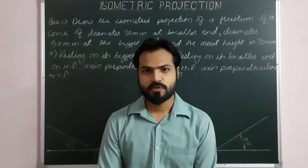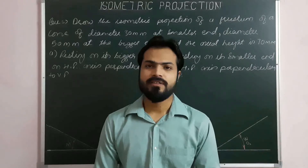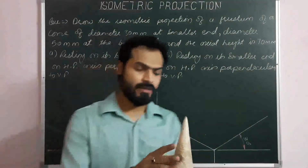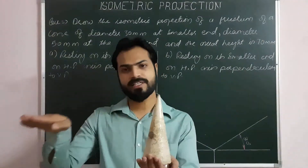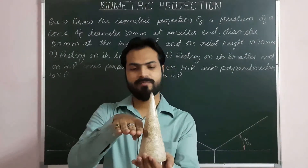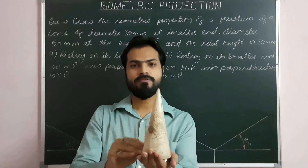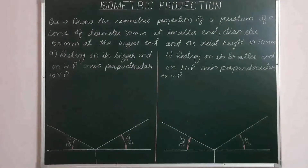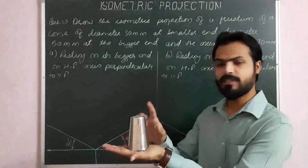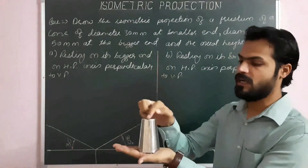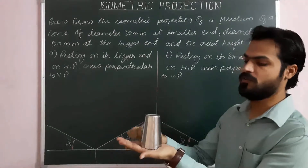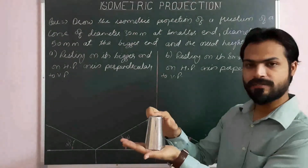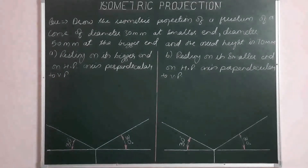Hello everyone. After projection of cones, we will now proceed towards frustum of cones. If we cut a cone by a section plane parallel to its base circle and remove the upper portion, we get a frustum of cone. It has an upper face and lower face. The first base is known as the base and the second base is known as the cut face.